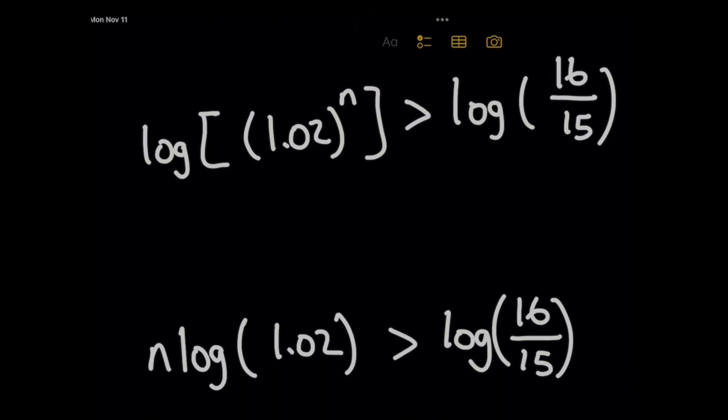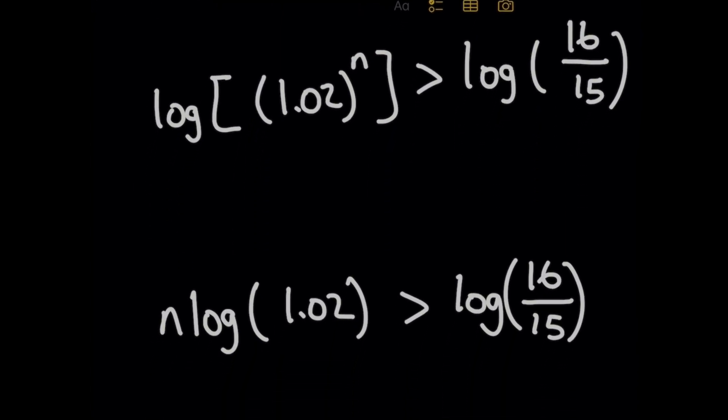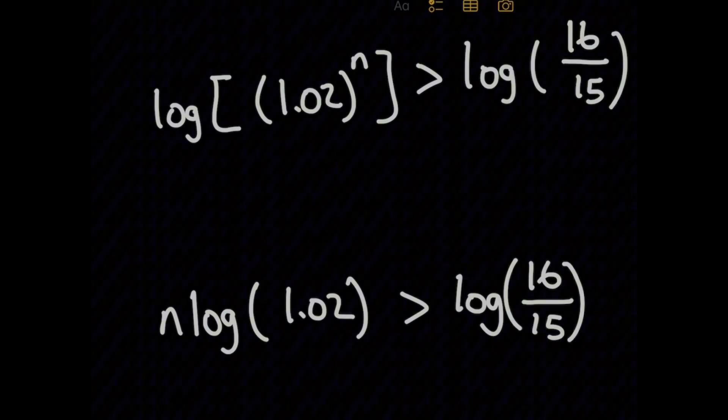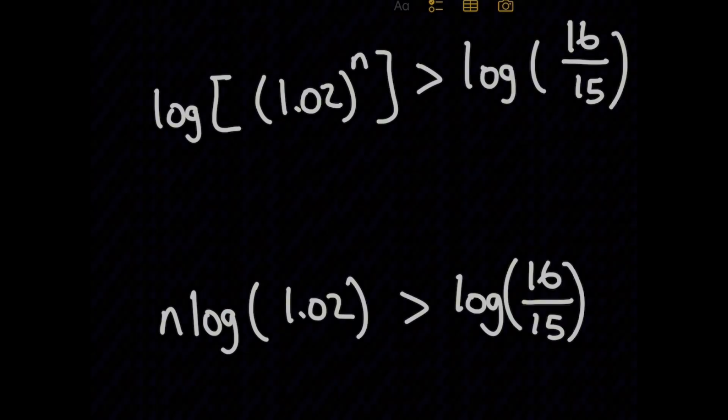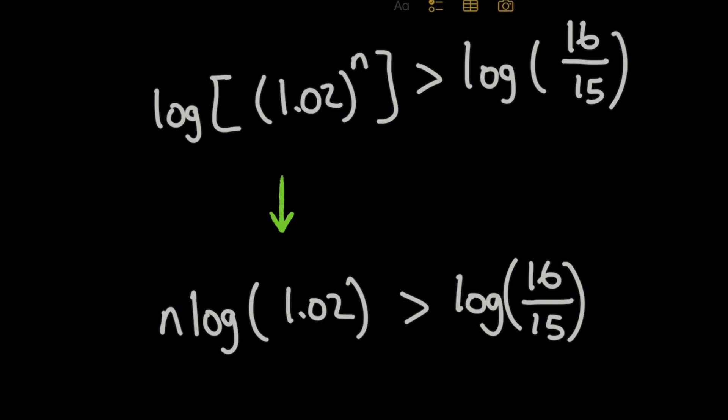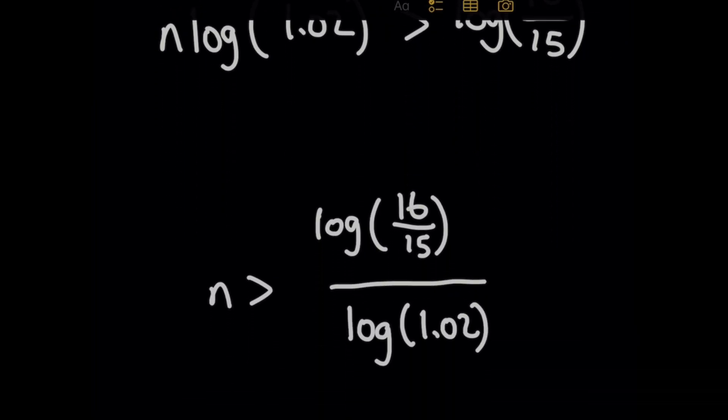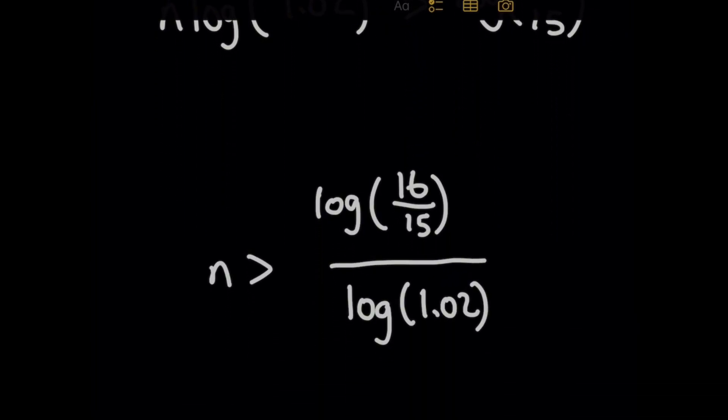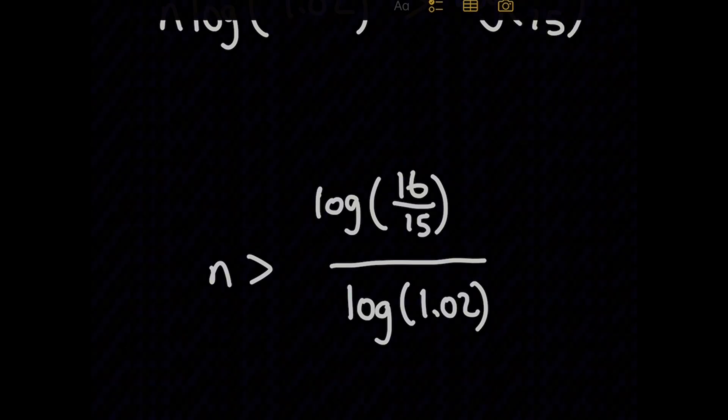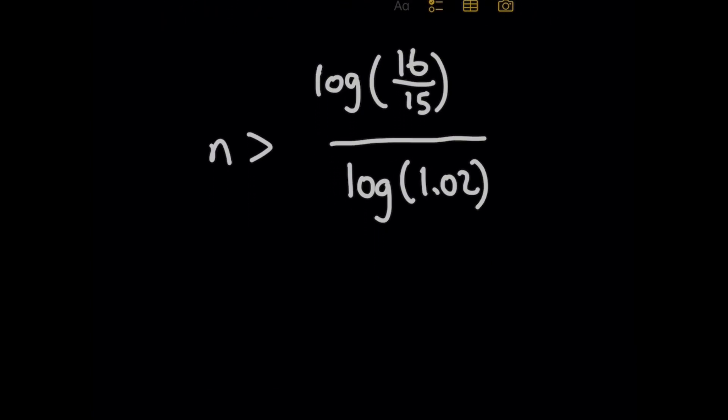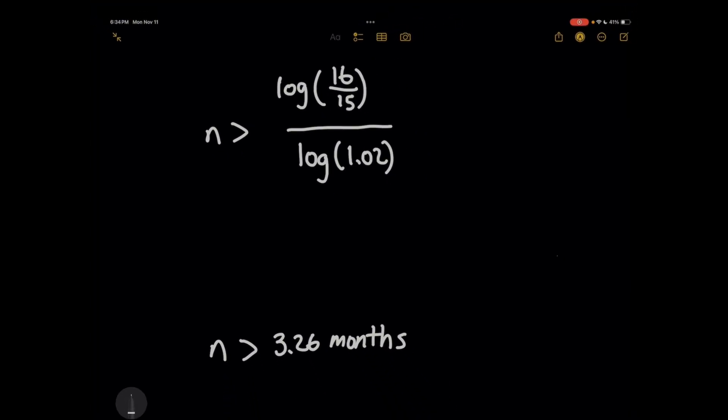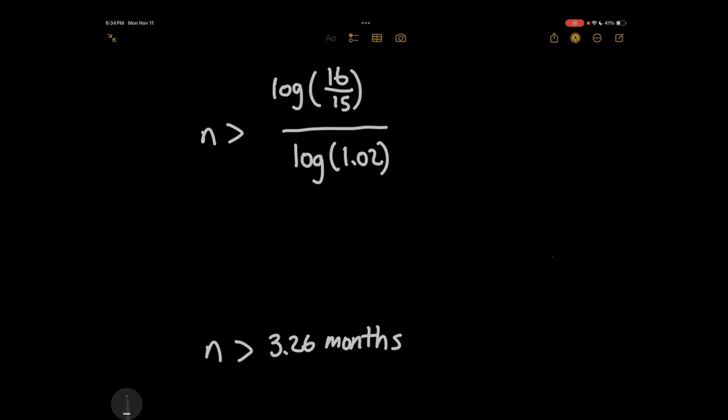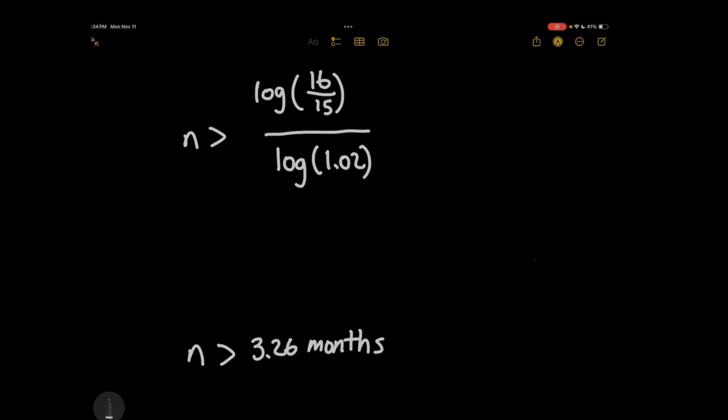And that gives us this new expression. And what's really nice about this now is now that we don't have an exponent anymore, we can now very easily divide both sides by log of 1.02 to figure out what n is going to be in this inequality. So when you get to that step here, and you evaluate this by finally plugging everything into a calculator, you're going to find that n is approximately 3.26 months. So that basically tells your manager, you should give me a raise because in about a little over three months, I'm just not making enough. And so if they give you another problem to solve like this one,